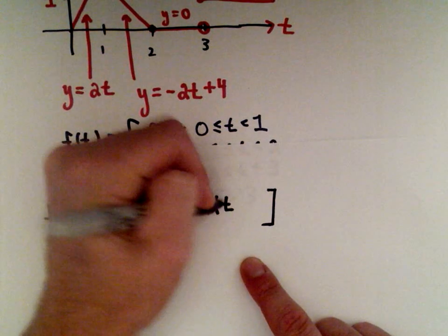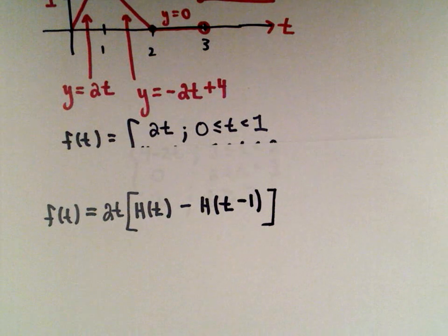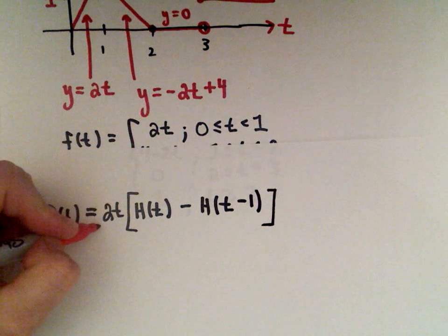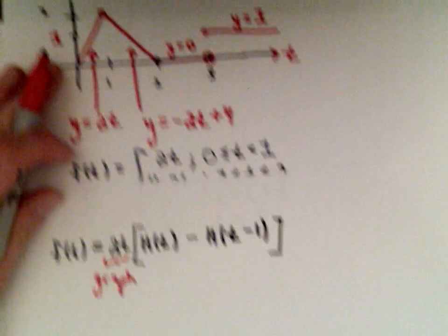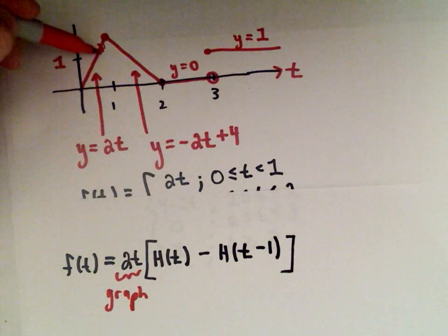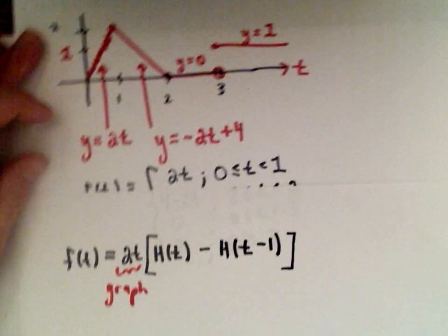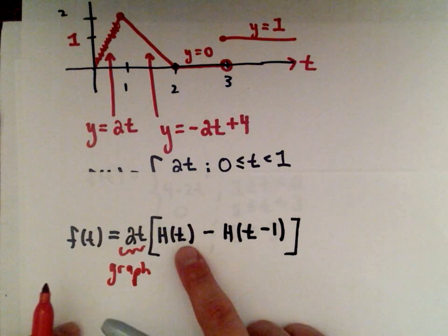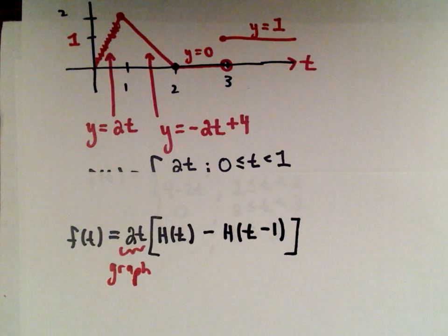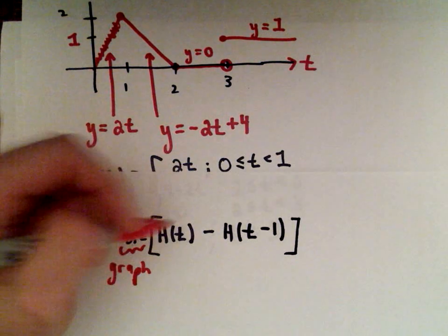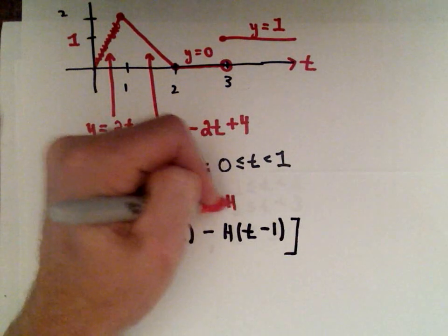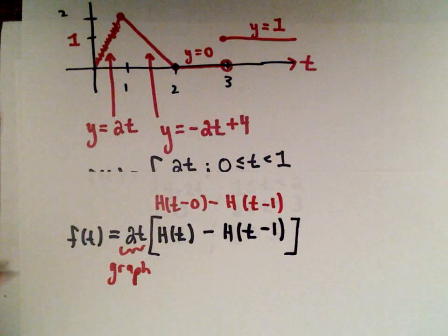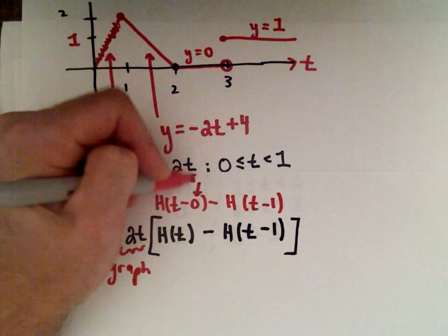And the way that we can write this is as h of t minus h of t minus 1. So when you look at this just think about this as being the graph. So we were graphing y equals 2t over the first interval, that's just again this section of the graph y equals 2t. If you look at the values next to t you can think about those as being sort of starting and stopping points of the graph.